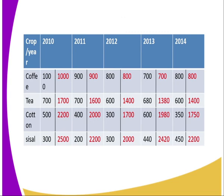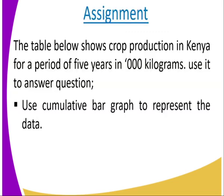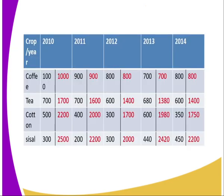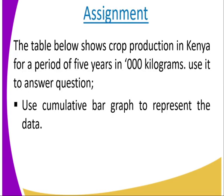This is the data you are supposed to use for the activity. The table shows crop production in Kenya for a period of five years, in thousands of kilograms. Use it to answer the question: use a cumulative bar graph to represent the data. That is the assignment.